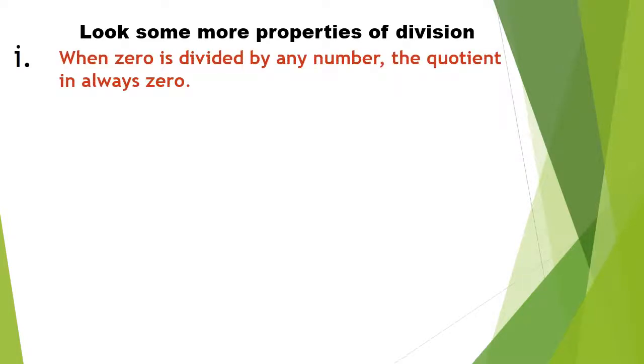First property: when zero is divided by any number, the quotient is always zero. For example, zero divided by 9 - the answer will be zero.